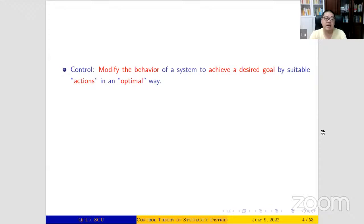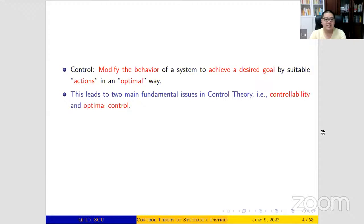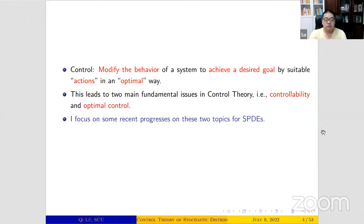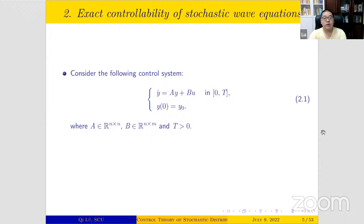We should focus on the concept of control. Here, control means to modify the behavior of a system to achieve a desired goal by suitable actions in an optimal way. We have two important aspects: one is to achieve a desired goal, and another is to do that in an optimal way. This leads to two fundamental issues in control theory: one is controllability, which corresponds to whether we can achieve a desired goal; the other is optimal control, meaning we want to control the system in an optimal way. Today I will focus on progress on these two issues.